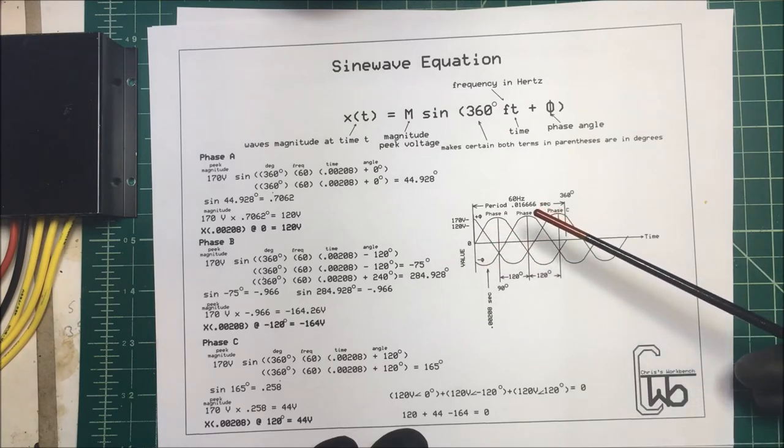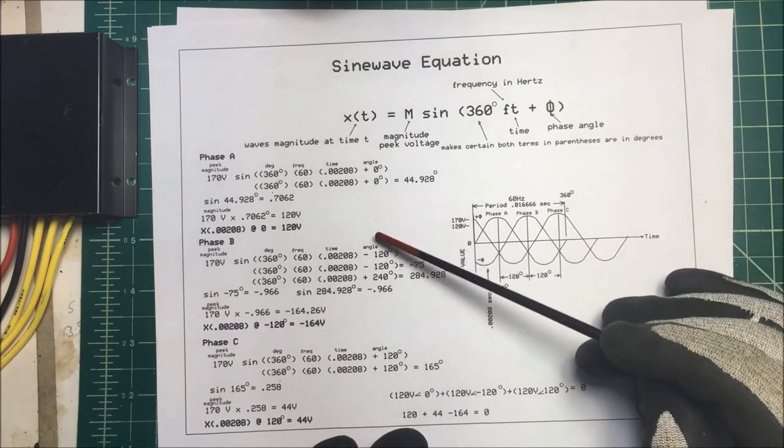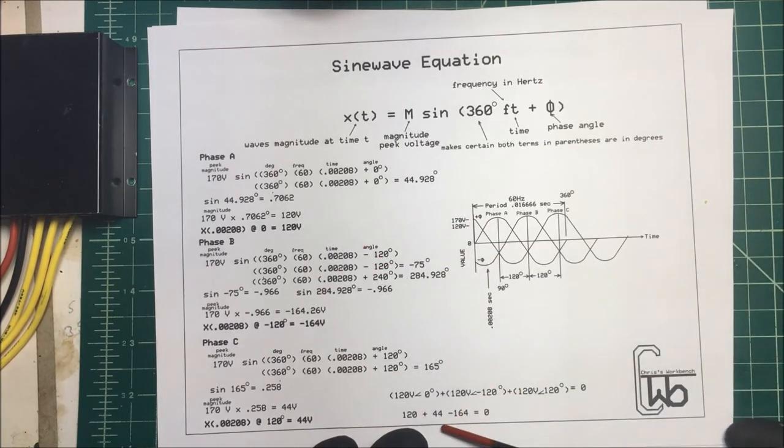Now if we add all these up - 120, the 44, and the minus 164 - that should come out to zero. And if you do it in polar form...